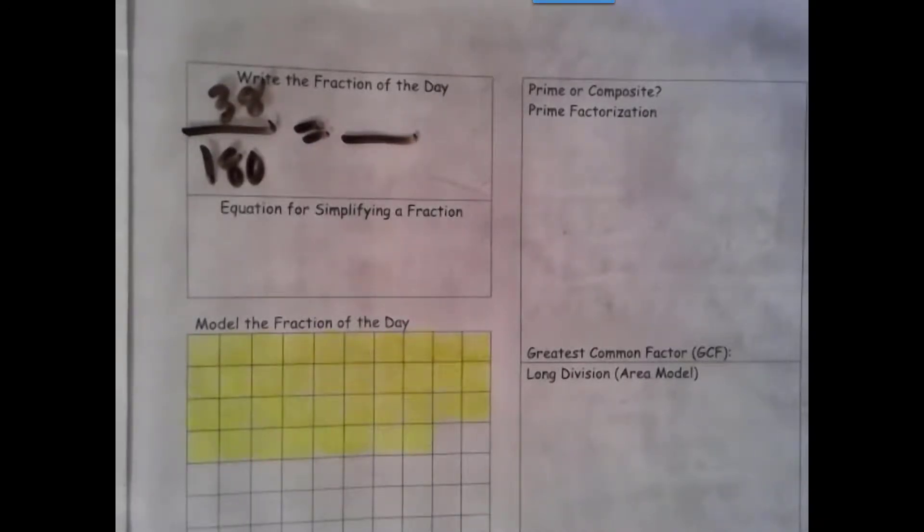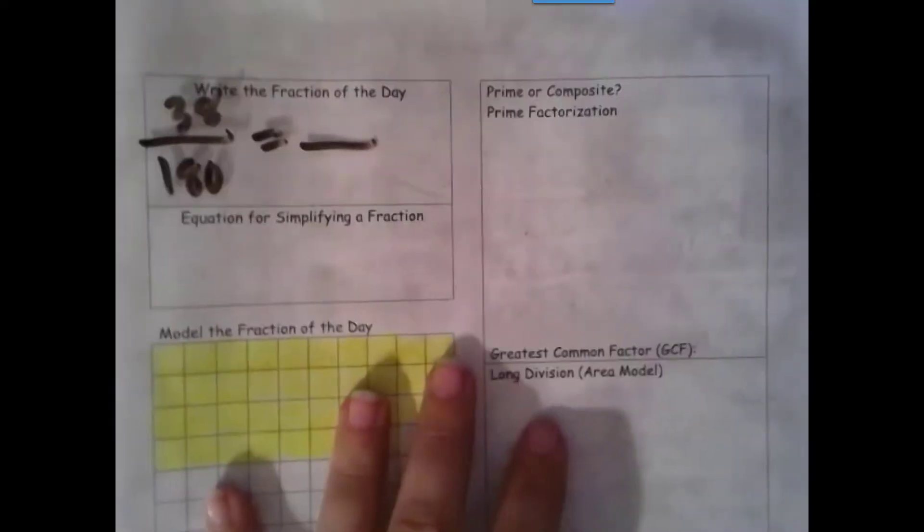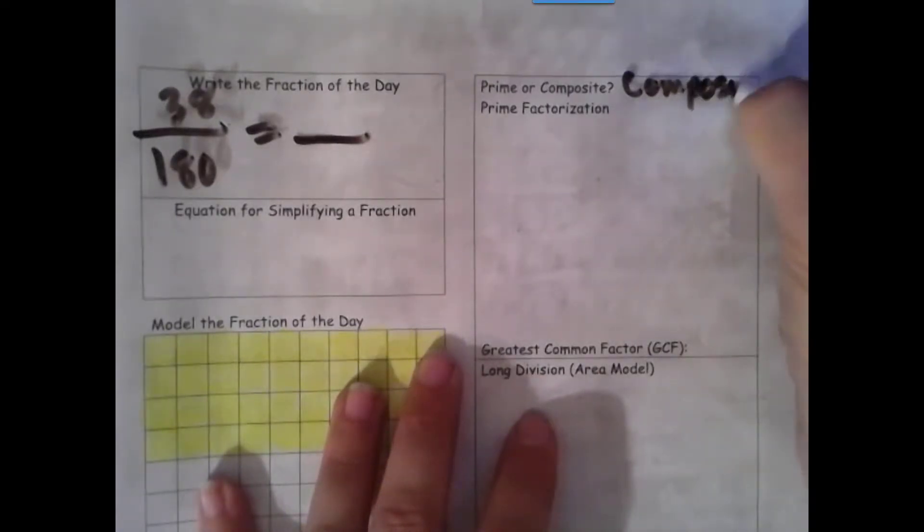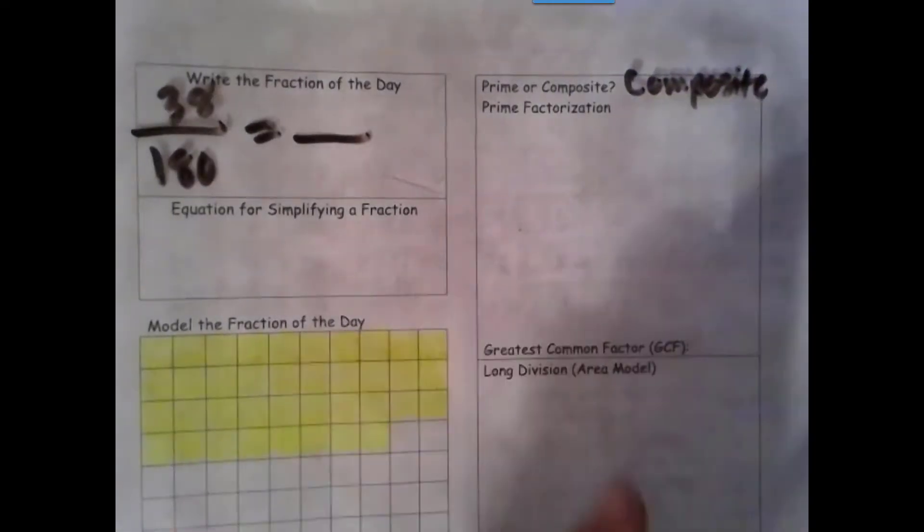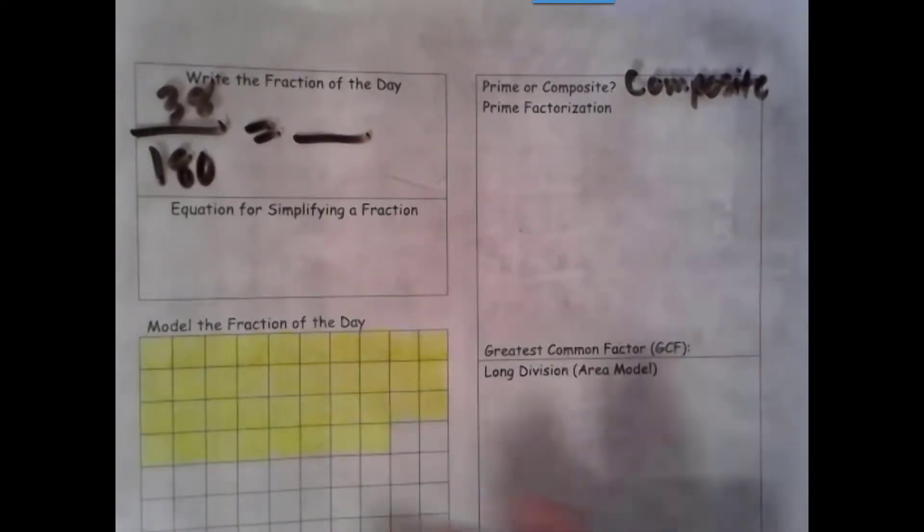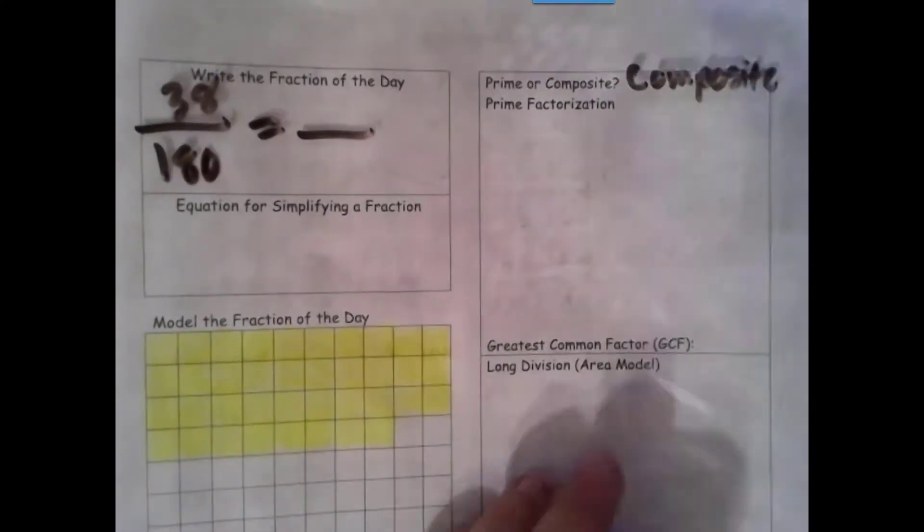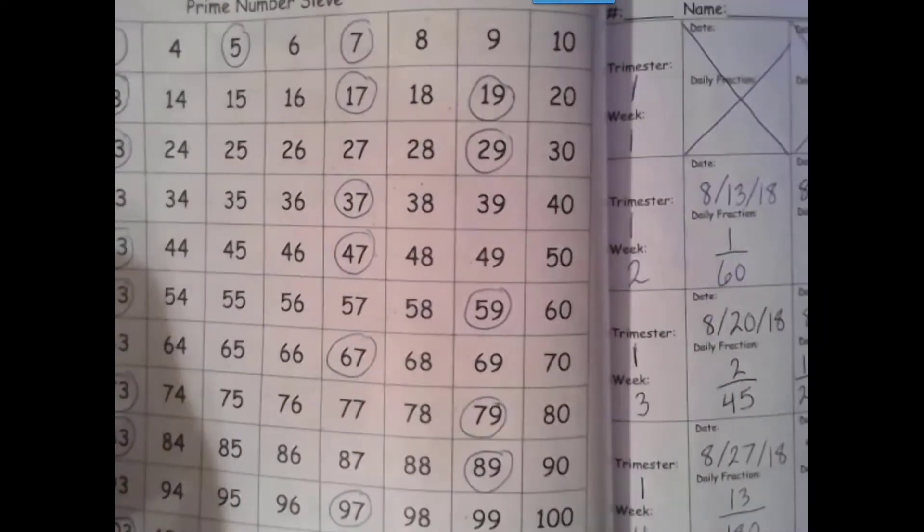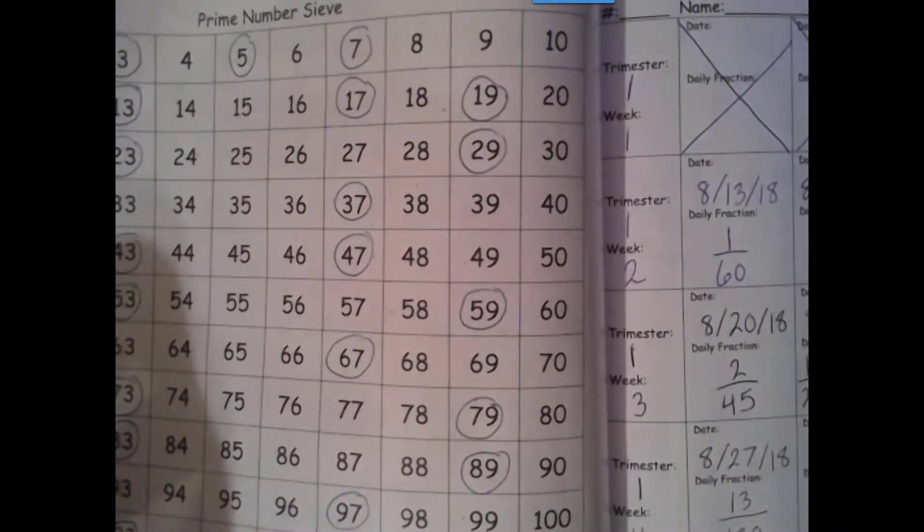We've got to figure out if it's prime or composite. Well, it ends in an even number, and the only even number that is prime is 2, so it must be composite. It must be composite because 1, itself, and 2 are all factors, and that's 3. That's already greater than 2 factors. If you want to check to make sure, you can always look in your prime number sieve.